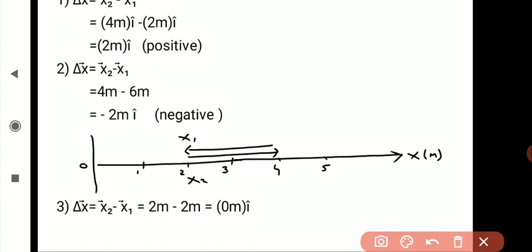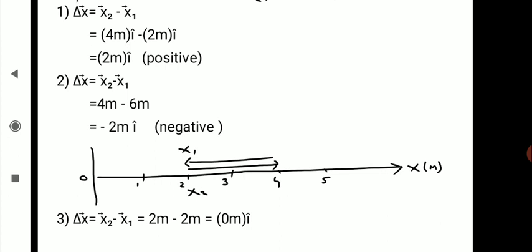In the third example, a particle moves from 2 meters to 4 meters and then returns from 4 meters back to 2 meters, meaning it returns to its original position. So here x1 equals 2 meters and x2 is also 2 meters. The displacement vector delta x bar equals x2 bar minus x1 bar equals 2 meter minus 2 meter equals 0 meter. So displacement is zero, which means the particle is back at its original position. Therefore, displacement may be positive, negative, or zero. I hope you understood displacement with these examples.